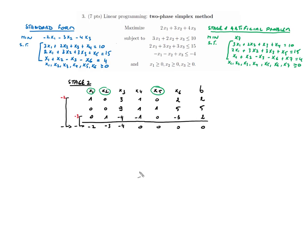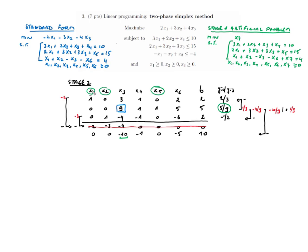Before starting stage two, we must ensure the tableau is in canonical form — zeros above and below each pivot. This is fine for x5 but we have minus 3 and minus 2 in the cost row for x1 and x2. We perform two row operations to fix this and bring the tableau into canonical form.